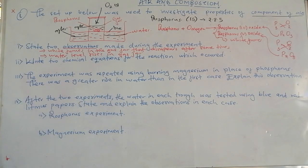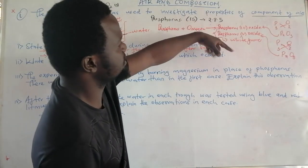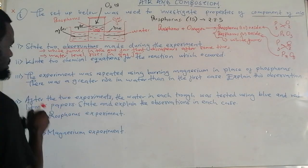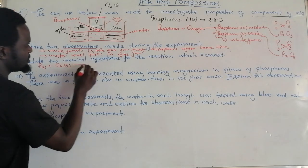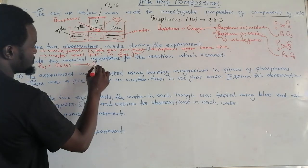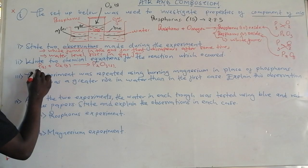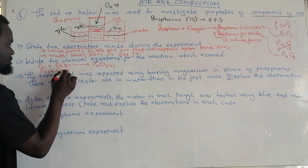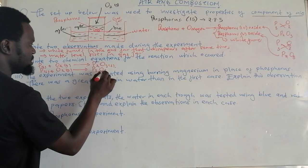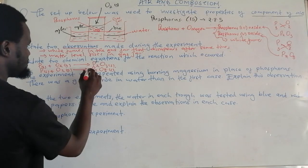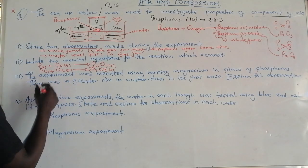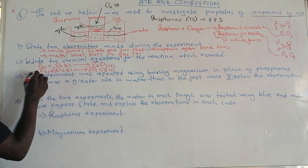Now let's go to the next question: write the chemical equations for the reaction that occurred. Phosphorus can form two oxides — phosphorus trioxide and phosphorus pentoxide. Phosphorus solid plus oxygen gas forms phosphorus trioxide solid, or phosphorus solid reacts with oxygen gas to form phosphorus pentoxide solid. When balanced: for P₂O₅, putting 2 gives phosphorus 4 and oxygen 10, meaning 5 O₂; for P₂O₃, putting 2 gives phosphorus 4 and oxygen 6, meaning 3 O₂.